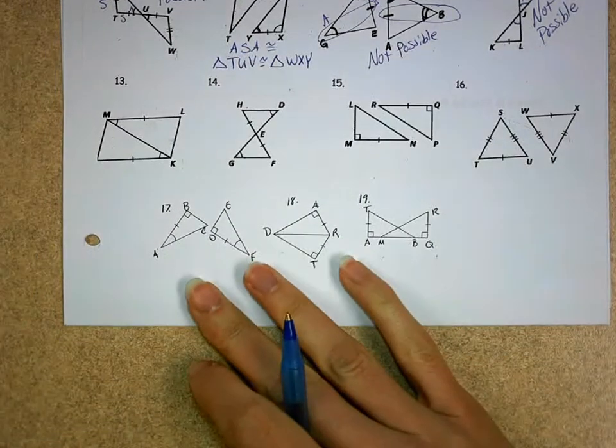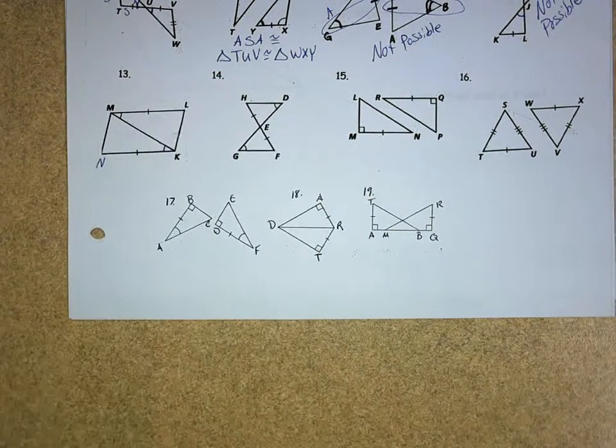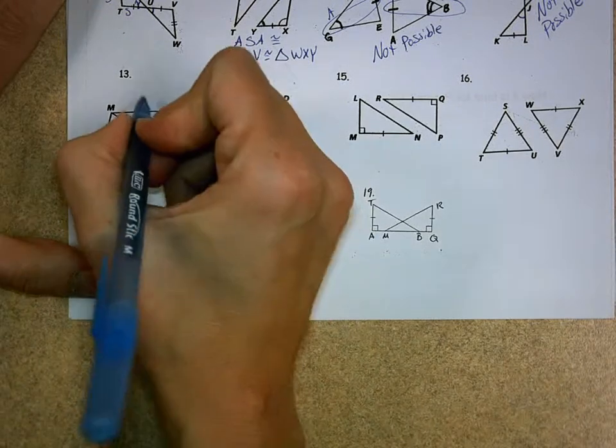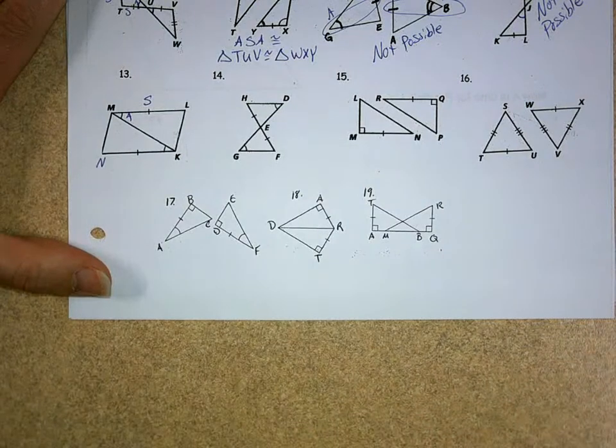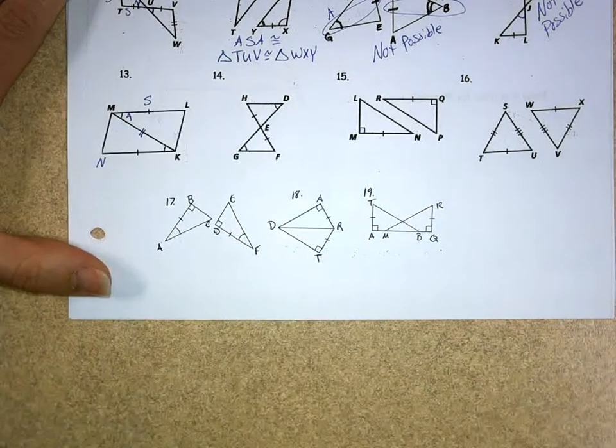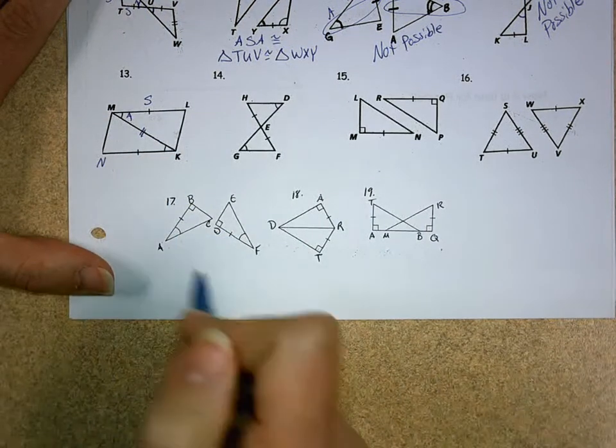Let's look at number 13. On number 13, I left out a letter. Let's put an N there. I'm looking at this one, and I have a pair of sides that are congruent. I have a pair of angles. I need either another pair of sides or another pair of angles. Well, you guys are getting really good at using the reflexive property, and you realize, oh yeah, that's a shared common side.